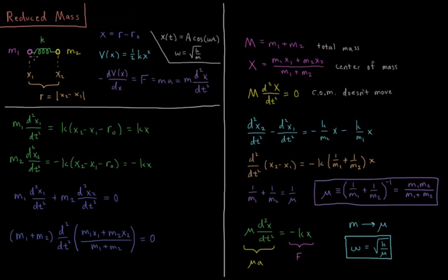We have our harmonic oscillator model. We have atom 1 with mass m1, atom 2 with mass m2. These two are bonded together by some spring constant k.